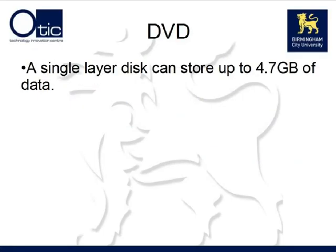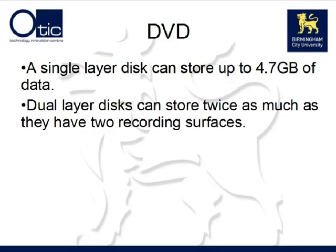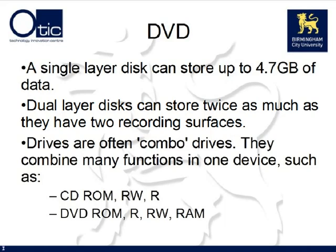The next type of optical storage we'll look at is the digital versatile disk, or DVD. This can store up to 4.7 gigabytes of data on a single-sided, single-layered disk. Dual-layered disks are available and can store twice as much data as they have two recording surfaces, though a special dual-layered drive is required to write to these disks. Modern DVD drives are often described as combo drives because they combine many functions in one device, such as CD-ROM, RW, and R, and also DVD-ROM, R, RW, and RAM — all in a single device.